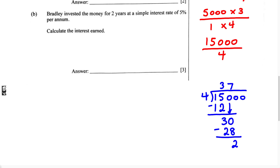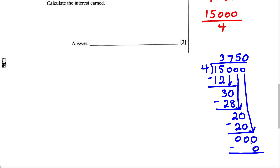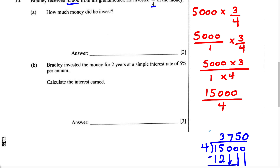We bring down the zero, giving us 30. Four can go into 30 seven times. Four times seven is 28. 30 minus 28 gives us two. We bring down the next zero, giving us 20. Four can go into 20 five times. Four times five is 20. 20 minus 20 is zero. Bring down the last zero. Four goes into zero, zero times. 15,000 divided by four gives us 3,750.